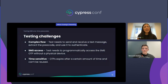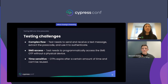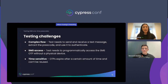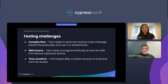Testing SMS OTPs presents a similar challenge to testing email magic links. You need to be able to send and receive a text message and retrieve the passcode from the SMS in order to authenticate. You also need programmatic access to the SMS OTP without a physical device on hand. And finally, OTPs expire after a certain amount of time and cannot be reused.